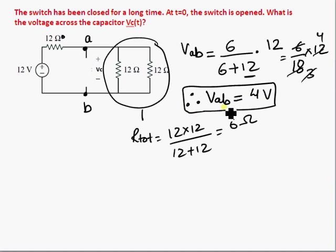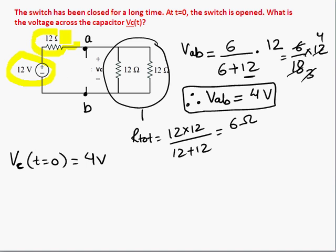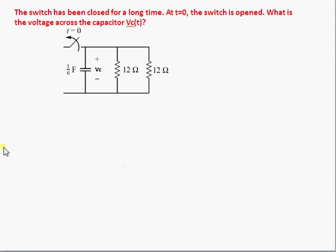So initially when the capacitor has reached steady state, the voltage across the capacitor is 4 volts, so at t equals 0, voltage of the capacitor at t equals 0 is equal to 4 volts. Now, our switch is then open, so this switch is going to be open, that means this DC voltage source and this resistor go away and our circuit looks like this.